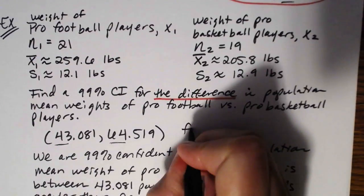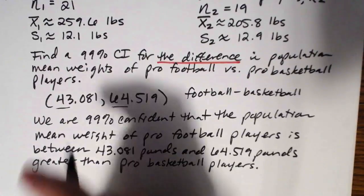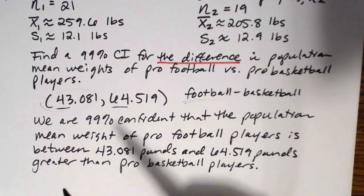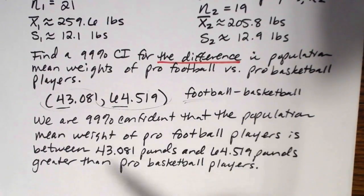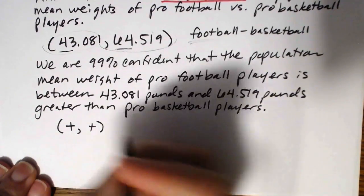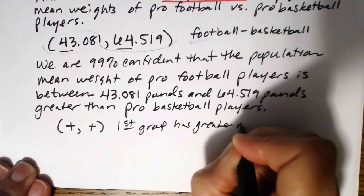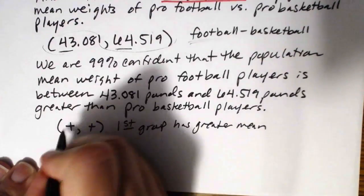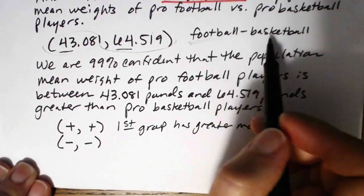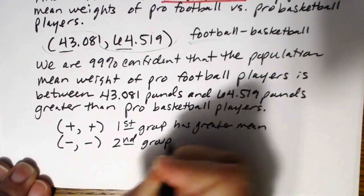Since football players came first, we were subtracting football minus basketball. The interval we got out is entirely positive, so at our lowest estimate football players weighed more by about 43 pounds, and at the high end still by about 64 pounds. If you get an interval with two positive endpoints, the first group has the greater mean. If you get an all-negative interval, that means the second group has the greater mean.